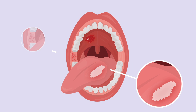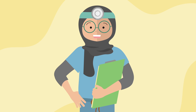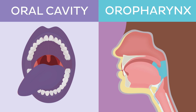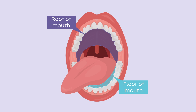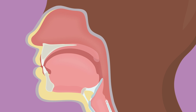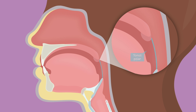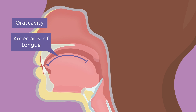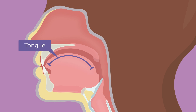Before we delve into the disease itself, we need to clearly understand what we are talking about. Doctors usually split what is commonly known as the mouth into two separate regions: the oral cavity and the oropharynx. The oral cavity comprises the lips, gums, tongue, cheeks, and roof and floor of the mouth. The oropharynx consists of the posterior and lateral walls of the throat, palatine tonsils, and the tonsillar pillars. Some authors include only the anterior two-thirds of the tongue in the oral cavity, leaving the posterior third in the oropharyngeal region, while others consider the whole tongue to be part of the oral cavity.